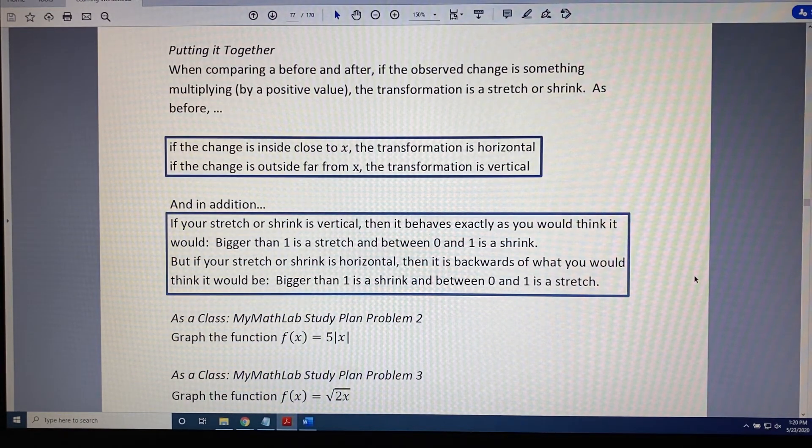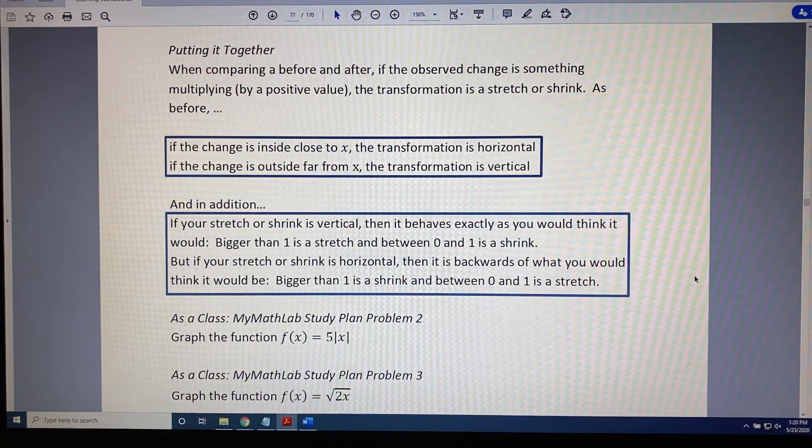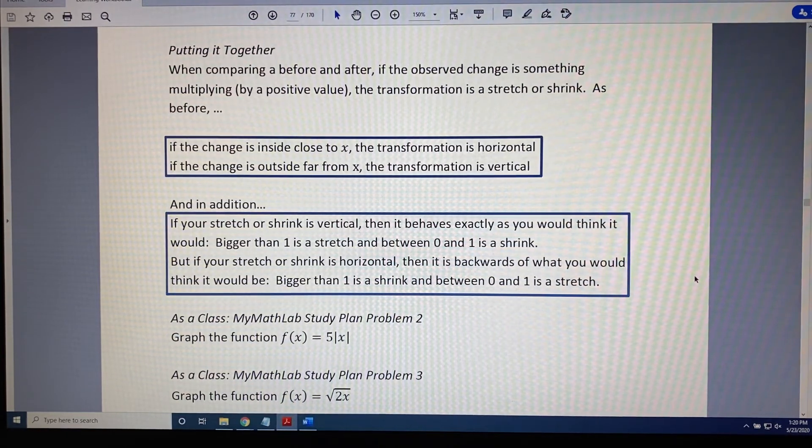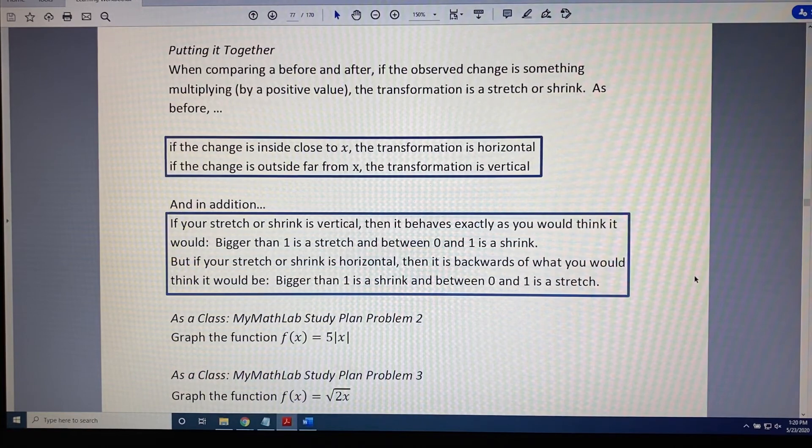But if your stretch or shrink is horizontal, then it is backwards of what you would expect. Bigger than 1, like 4 or 8 or 100, would be a shrink. And between 0 and 1, like 1 tenth or 1 twentieth or 0.05, would be a stretch.